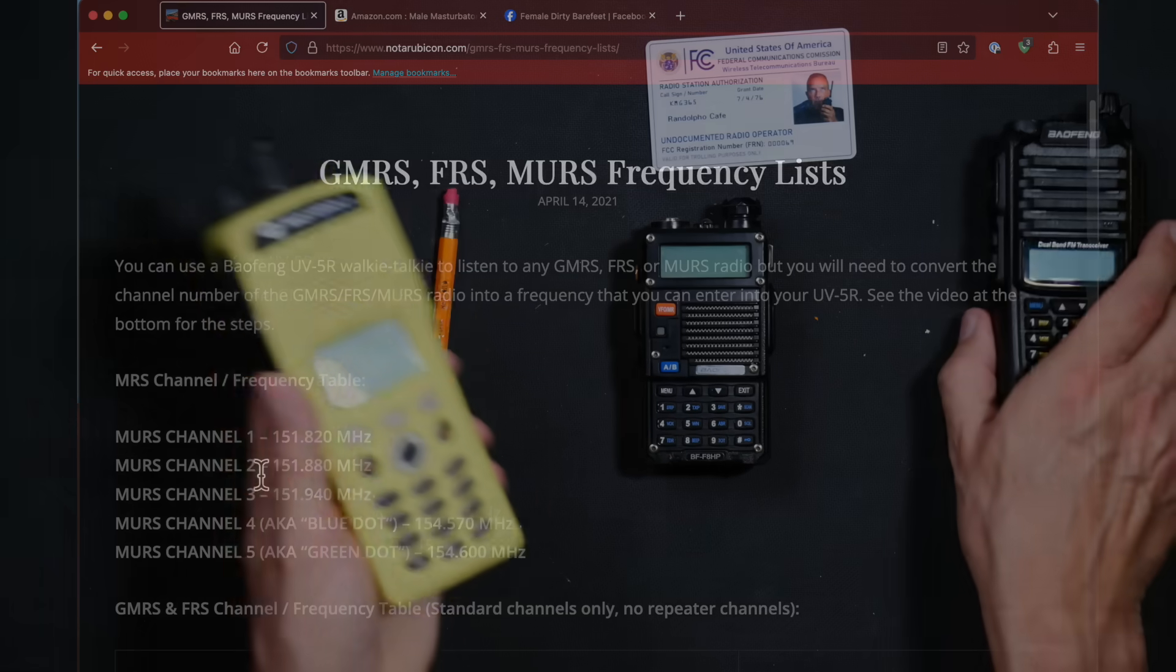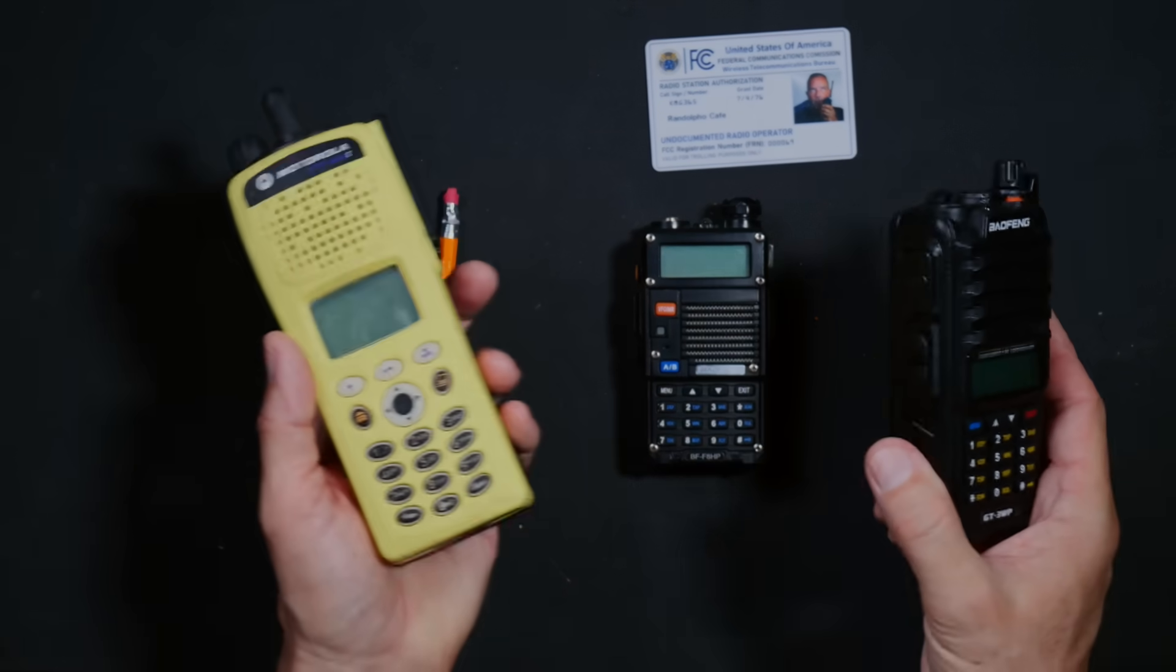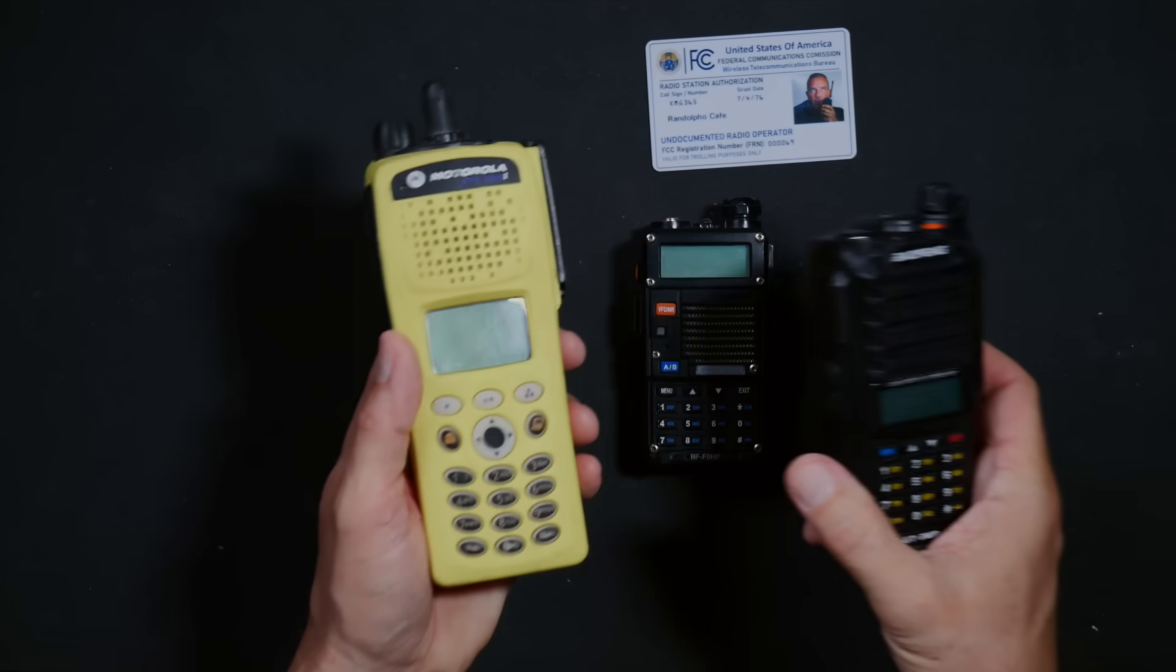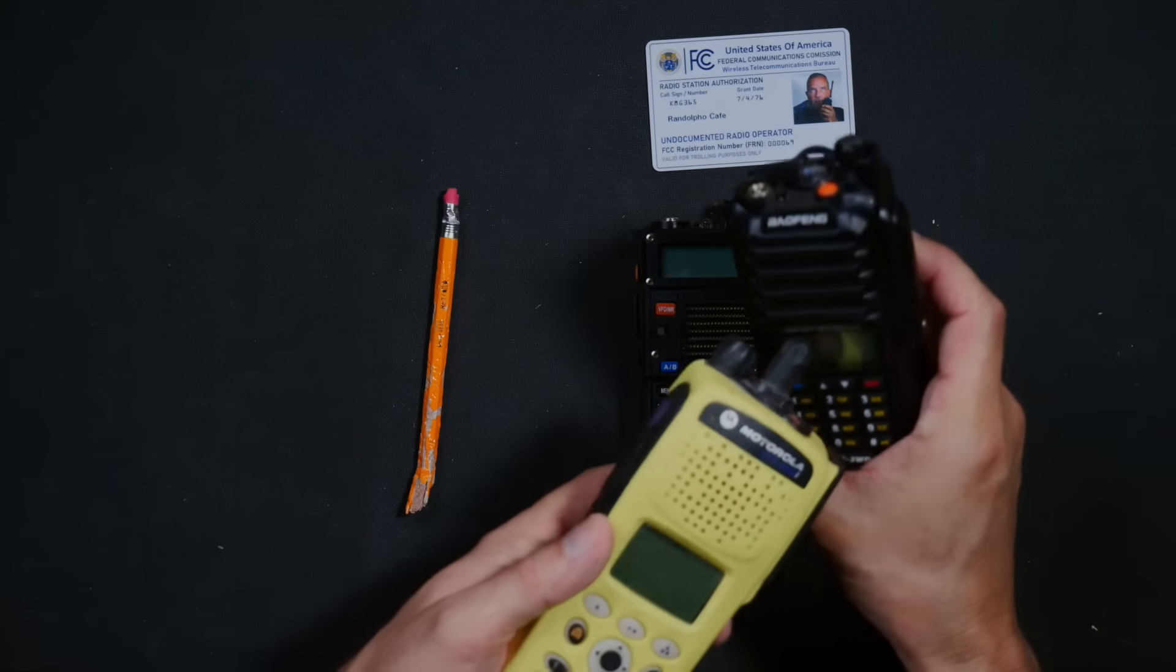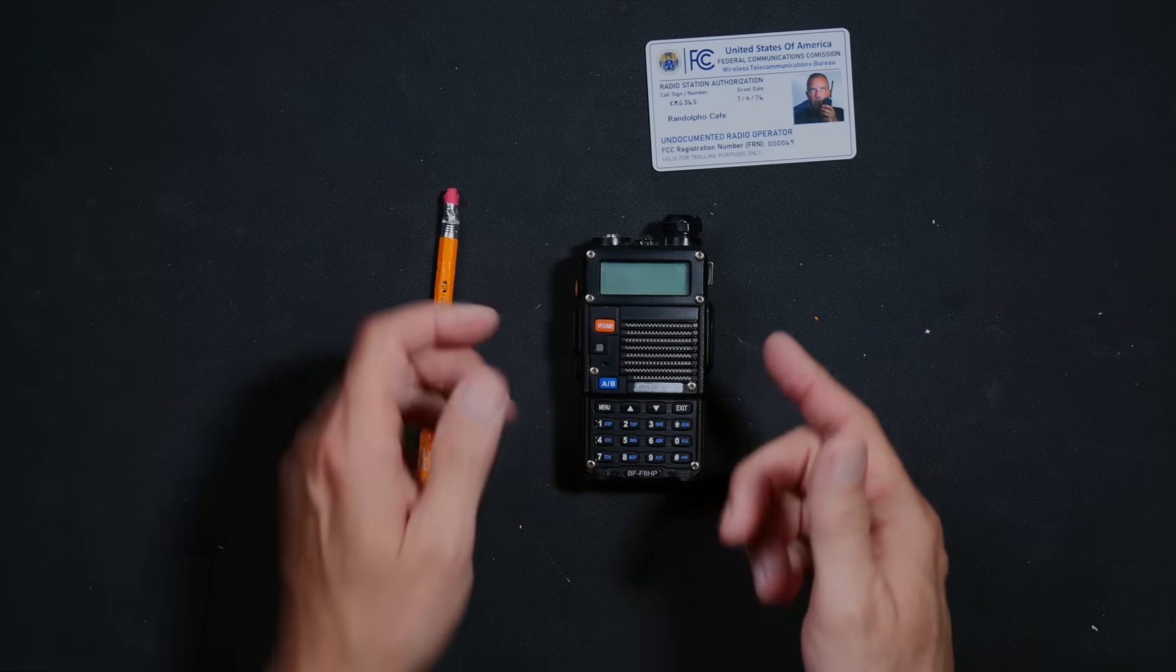If the radio has no channels and just shows frequencies on the screen, then you can skip that part and just write down the frequency right off of the screen. And one other very important note.